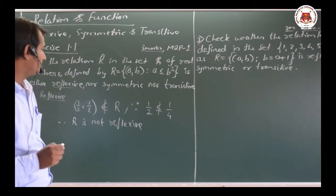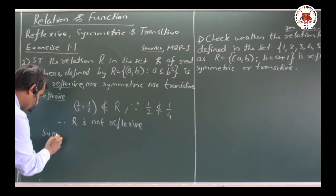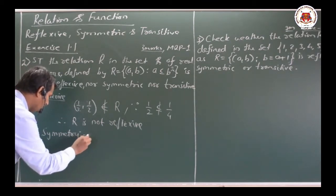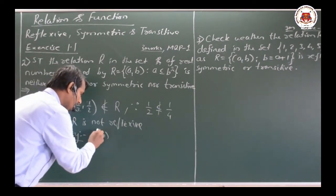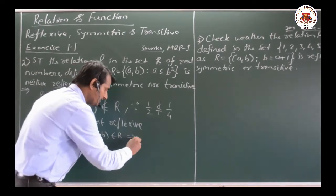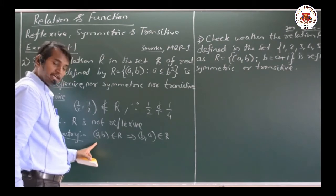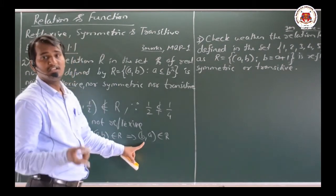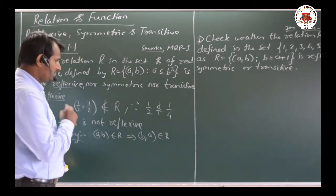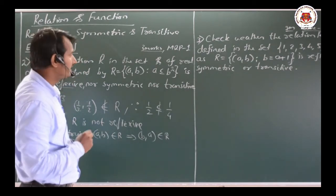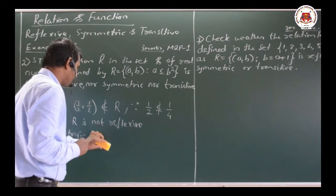Now let us check symmetry. The definition of symmetry is: if (A, B) belongs to R, that implies (B, A) should also belong to R. If that does not hold, it is not symmetric. Let us take some examples using the condition A ≤ B².